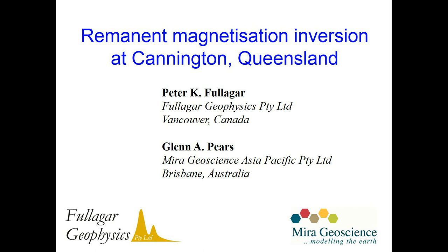Thank you, Brendan. Good morning, everyone. The title of my talk is Remnant Magnetisation Inversion at Cannington, Queensland — or it could be called Cannington Mag Revisited. The background is that we were contracted by BHP to interpret their magnetic data at Cannington in 2002 and took it as far as we could at that time with the available software. In particular, we were thwarted by inability to model remnants as we wished, and also inability to take self-demagnetisation into account. This talk is about efforts to overcome those problems and to revisit the data in 2014 — over a decade later.